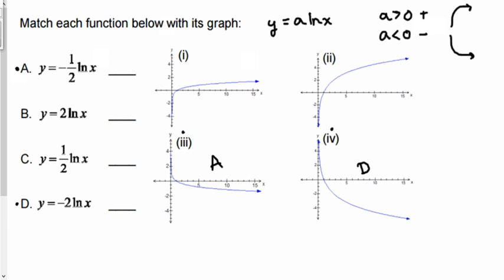So now I want to look at the two positive graphs. And I've got two ln x and a half ln x. So I know they're going to be paired with one and two.